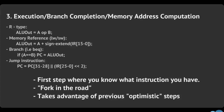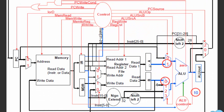Let me show you how that looks in the datapath. You have RS stored in A and RT stored in B. You set ALU source A — the signal to the multiplexer — to 1, so A goes into the ALU. Then you set ALU source B to 0 so you get access to B, and B goes in as well.